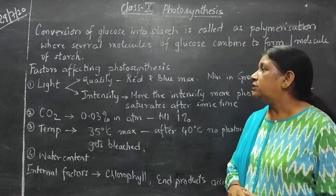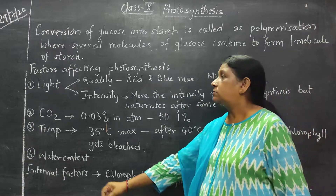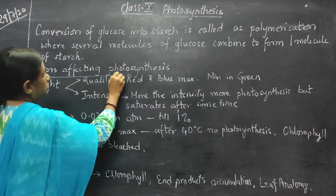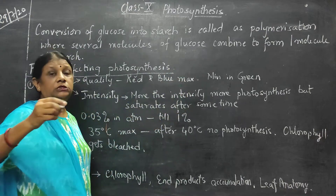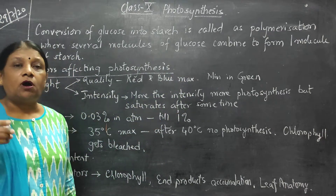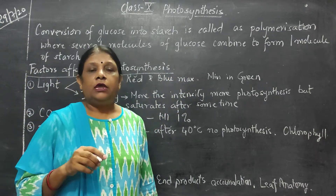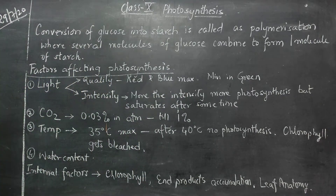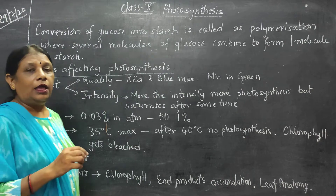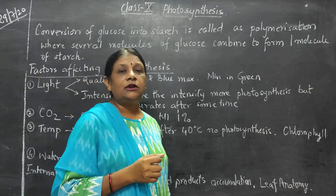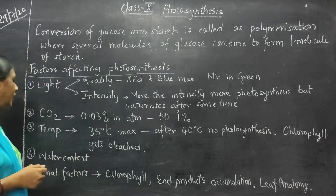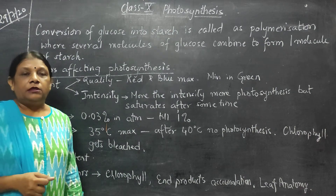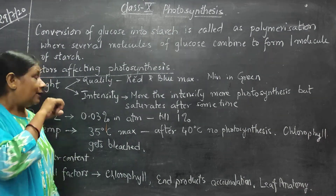Next comes factors affecting photosynthesis. What are the factors that affect photosynthesis — whether photosynthesis will increase or decrease if we increase or decrease these factors? They are of two types: internal and external. External factors are light, carbon dioxide, temperature and water.